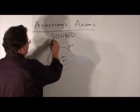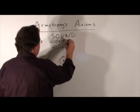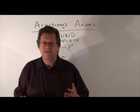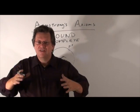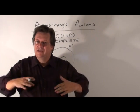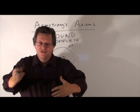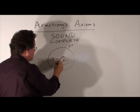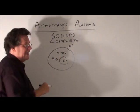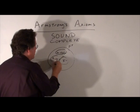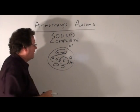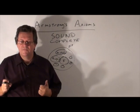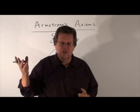Now, we also want to say that Armstrong's axioms are complete. By saying Armstrong's axioms are complete, that means if there's a logically implied functional dependency inside of F closure, we're going to find it. So, Armstrong's axioms will find all those functional dependencies within F closure. So, we have this notion of sound, and we have this notion of complete.